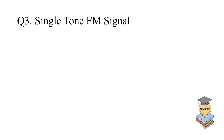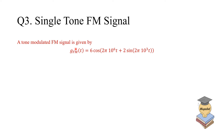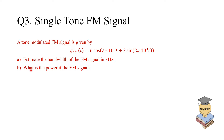We'll start with an easier one, then give you a more difficult question in number four. Question three: a tone-modulated FM signal is given by the following expression. We'll ask you for two things — estimate the bandwidth of the FM signal in kilohertz, and also what is the power of the FM signal? Pause the video for about four minutes and find the answers for parts A and B.